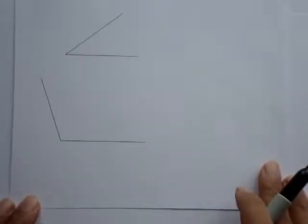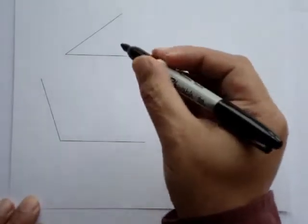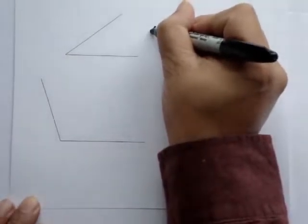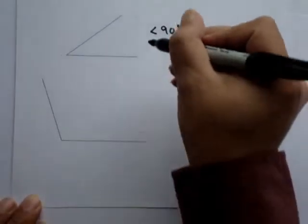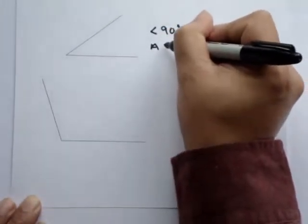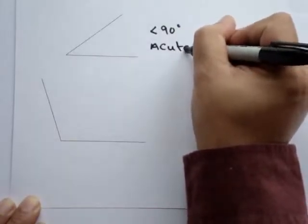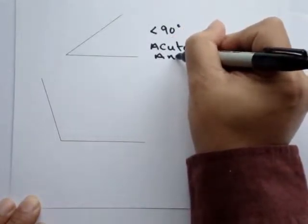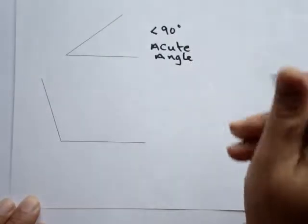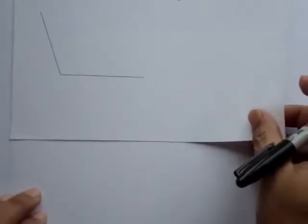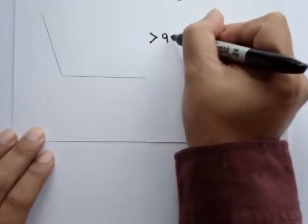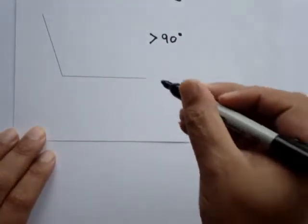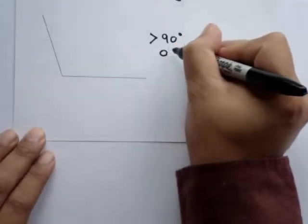If we have an angle which is less than 90 degrees, then this is called an acute angle. If we have an angle which is greater than 90 degrees, then this is called an obtuse angle.